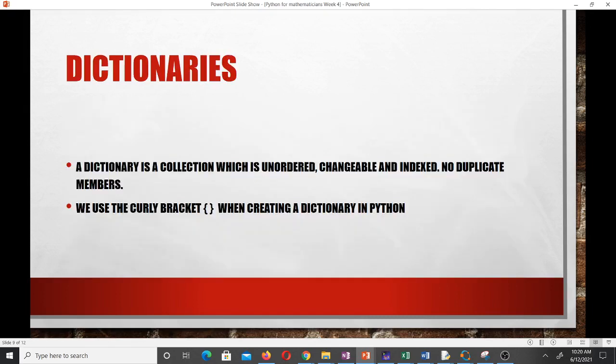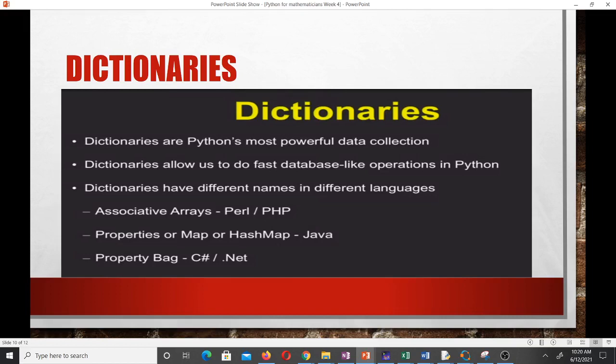Now let's go to dictionaries. Actually with all the collection data types that we have, the dictionary is the most powerful data type. A dictionary is a collection which is unordered, changeable and indexed and it has no duplicate members. To create dictionaries in Python we use the curly brackets. Lists use square brackets, tuples use parentheses, so for dictionaries we use the curly brackets.